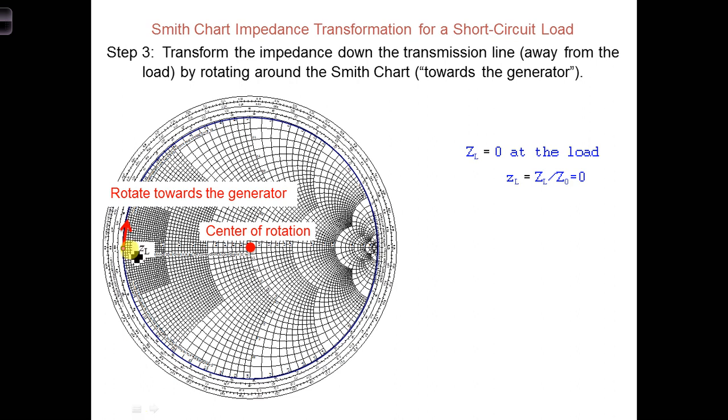So, we're going to use the wavelengths towards the generator scale, since we plotted the load impedance zl, so now we're traveling down the transmission line towards the generator. Note that in this particular example, we rotate along the R equals zero circle, which is already drawn for you. So, in general, we're not going to be rotating along a circle that's already on the Smith chart, and so you'll have to draw your own. The center of rotation is always right here in the middle.